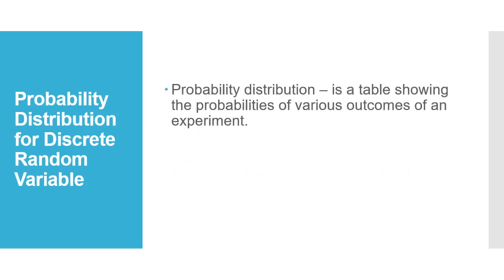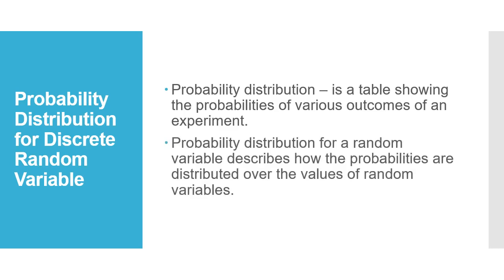Probability distribution is a table showing the probabilities of various outcomes of an experiment. It presents all the probabilities of the expected outcomes. It may come in list form, and if tabulated, it is called the probability distribution table. Probability distribution for a random variable describes how the probabilities are distributed over the values of the random variable.